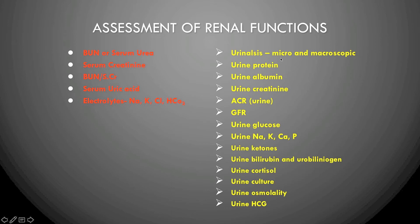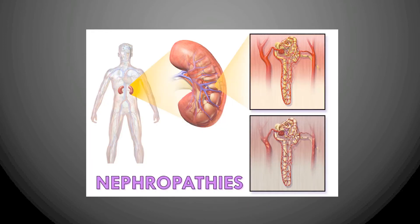Urine tests include urinalysis (microscopic and macroscopic), urine proteins, urine albumin, urine creatinine, albumin-to-creatinine ratio, glomerular filtration rate (GFR), urine glucose, sodium, potassium, calcium, phosphorus, urine ketones, bilirubin, urobilinogen, urine cortisol, urine culture, urine osmolality, and urine hCG.